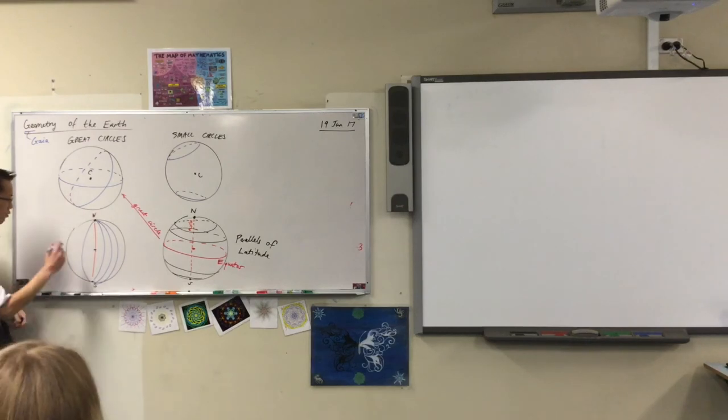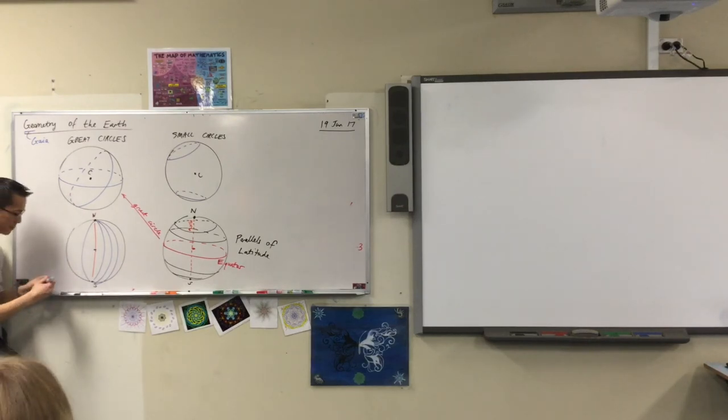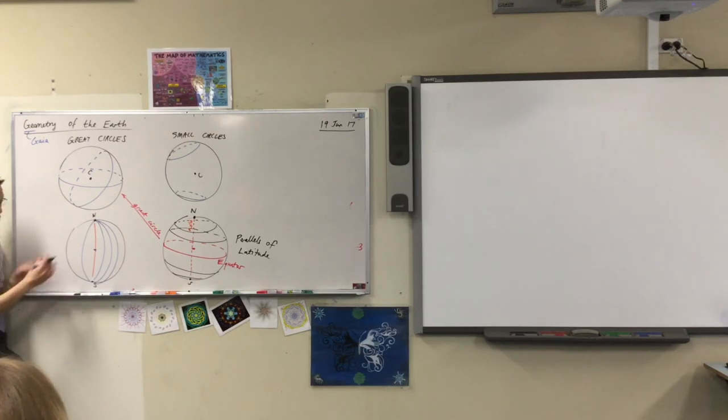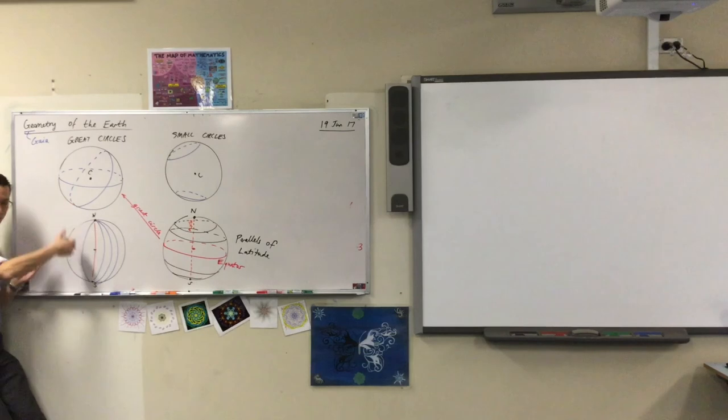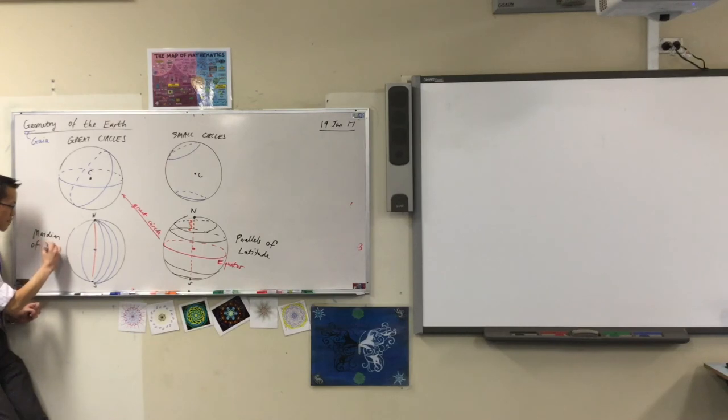Instead of calling them parallels, we call them... Does anyone know what they're called? Longitude. Longitude is the category of what we're describing here. But the actual, each individual one is called a meridian. Oh, that's fine, meridians. You're like, oh yeah, I remember this from some level of geography that I did. Meridians are longitude. Okay.